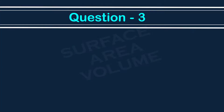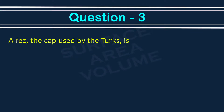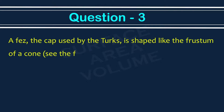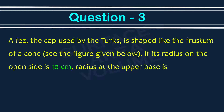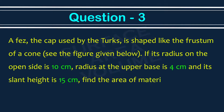Surface area and volume, Exercise 13.4, Question number 3. A fez, the cap used by Turks, is shaped like a frustum of a cone. If its radius on the open side is 10 centimeter, radius at the upper base is 4 centimeter, and its slant height is 15 centimeter, find the area of material used for making it.